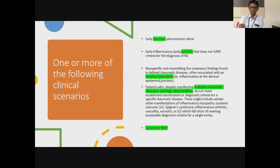They may have some manifestations of inflammatory myopathy, lupus, systemic sclerosis, or Sjogren's. Or there is an inflammatory arthritis, serositis, vasculitis, or lung inflammation, but it doesn't fulfill any criteria of a known autoimmune rheumatic disease. There might also be another group of patients who come just with respiratory symptoms — cough or breathlessness — and we can make a diagnosis of interstitial lung disease, but not beyond that.